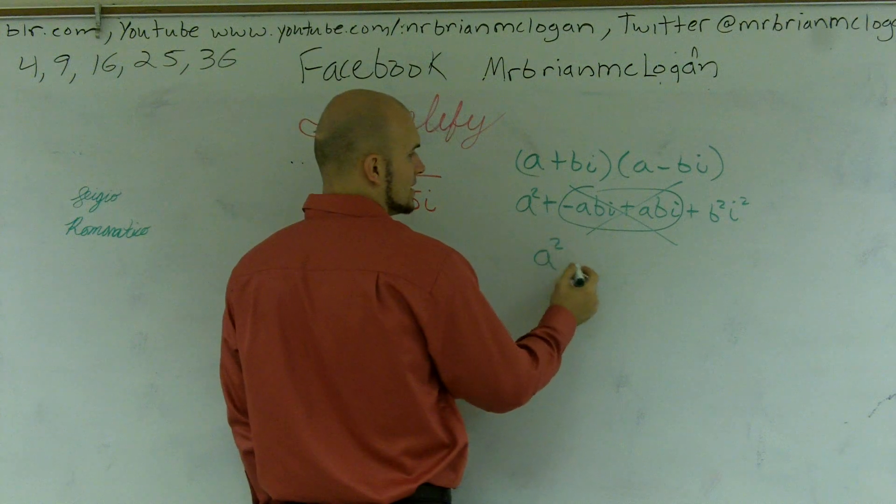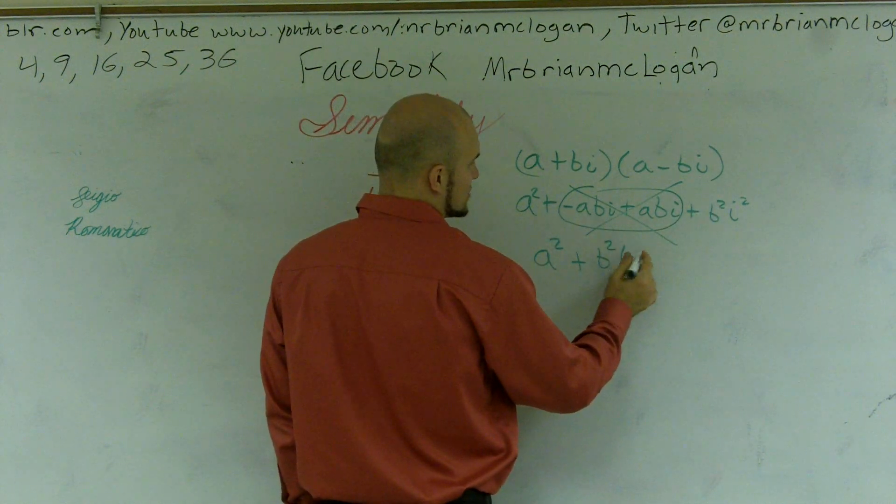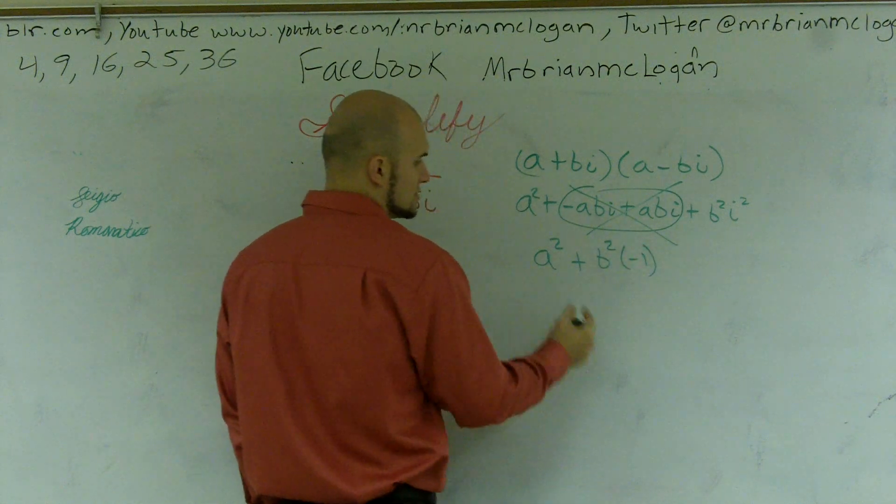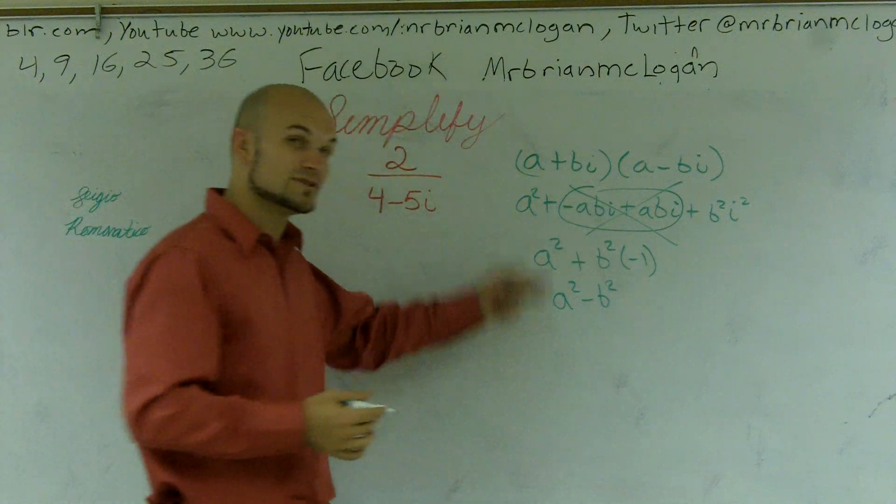And I'm left with a squared plus b squared times i squared, which is negative 1. So therefore, I'm left with a squared minus b squared, which we call a difference of two squares.